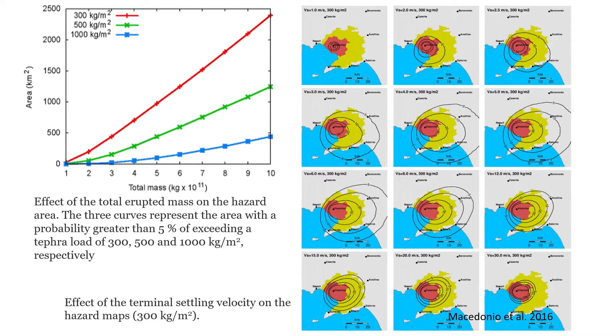The model results depend on and are more sensitive to some key parameters. Studies reveal that dispersal simulation results are indeed very sensitive to, for example, the total emitted mass. Here is an example showing the affected area for different thresholds and how it increases with increasing mass given as input to the model. It is also known that the settling velocity — the velocity by which particles fall toward the ground — has a major impact on results, and using a variety of settling velocities produces different extents of ground impact.